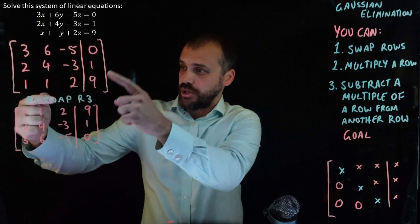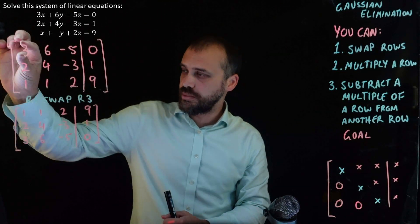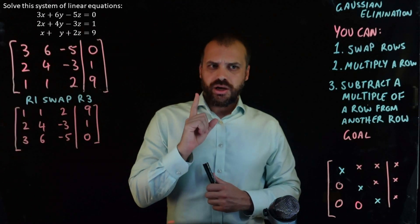Okay, so you can see now that I've done my swap. This entire row has gone up to the top and this entire row has gone to the bottom.